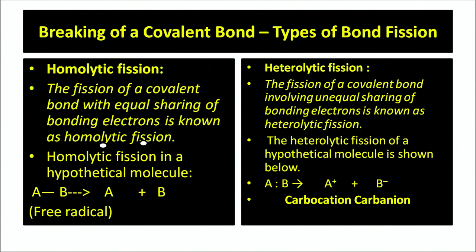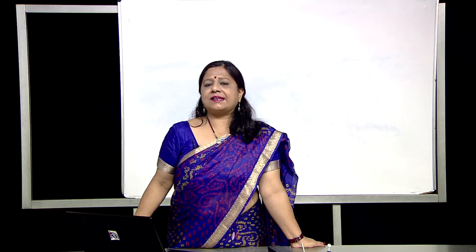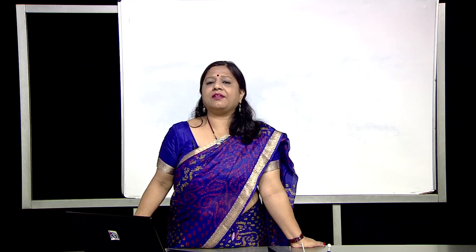Looking at this hypothetically for molecule A-B: in homolytic fission, A takes away the same number of electrons as B, so these species are called free radicals. Whereas in heterolytic fission, one atom acquires a negative charge, which is called a carbanion, and the other atom acquires a positive charge, which is called a carbocation.